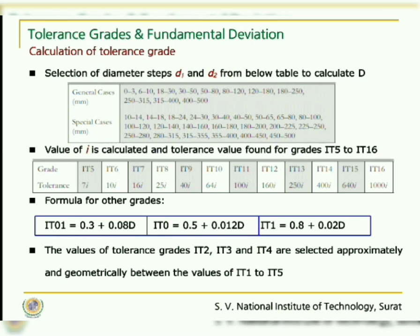For tolerance grade IT5, the value of tolerance is 7i. For IT6, it is 10i. Similarly, for IT16, it is 1000i. For the other tolerance grades IT01, IT0, and IT1, specific equations must be used to calculate the tolerance. The values of tolerance grades IT2, IT3, and IT4 are selected approximately and geometrically between the values of IT1 and IT5.